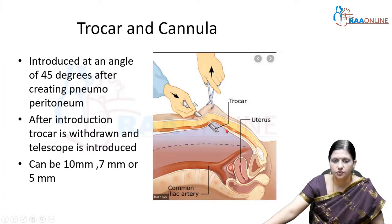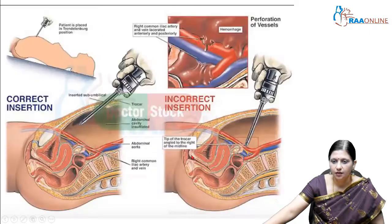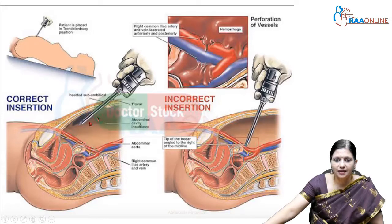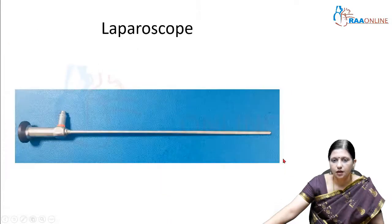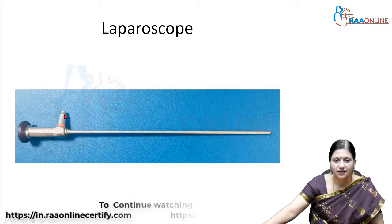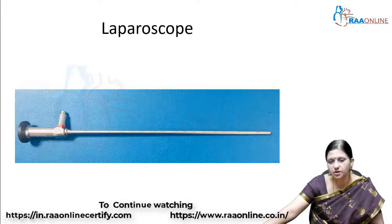We have various sizes: 10mm, 7mm, or 5mm. The correct insertion method is at an angle of 45 degrees — if we were to insert it directly without making an angle, we can injure the vessels, which can lead to torrential hemorrhage. Coming to the laparoscope, this is a Karl Storz variety. This goes to the video monitor and this goes to the light source. It has an angle of 30 degrees and uses a rod lens system.